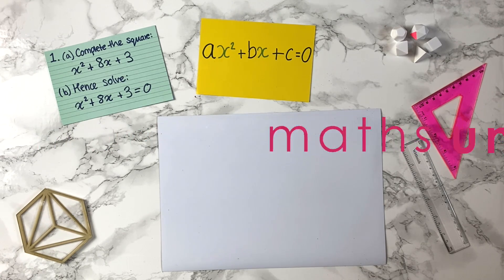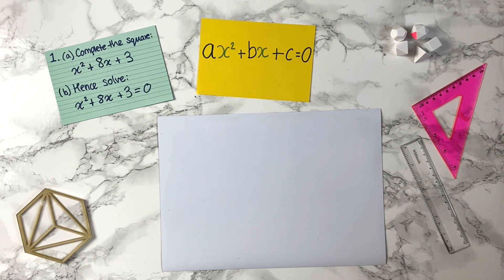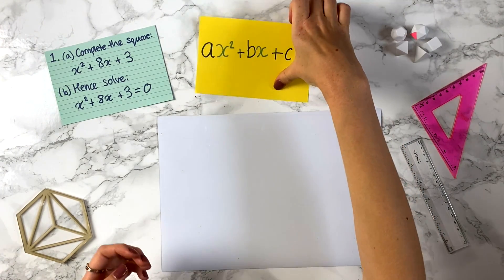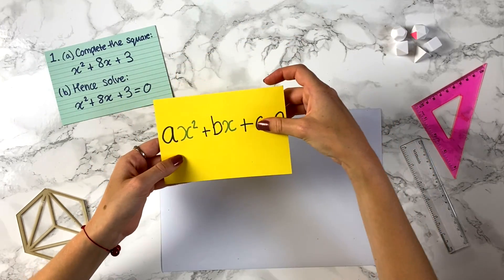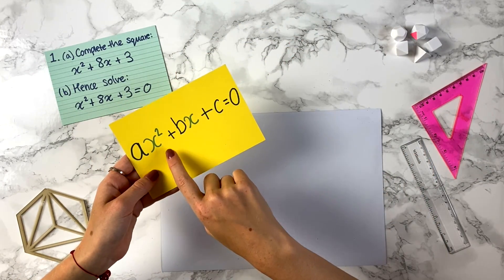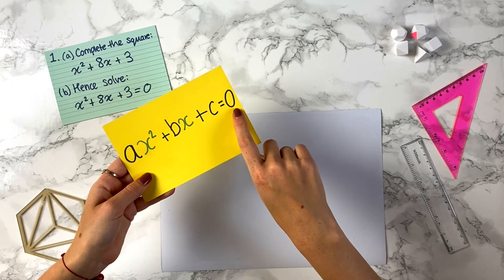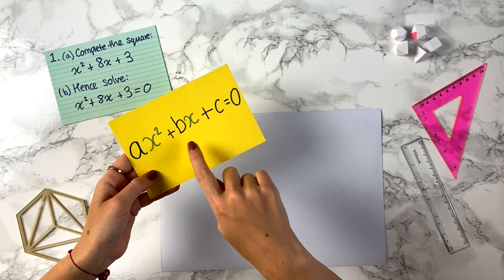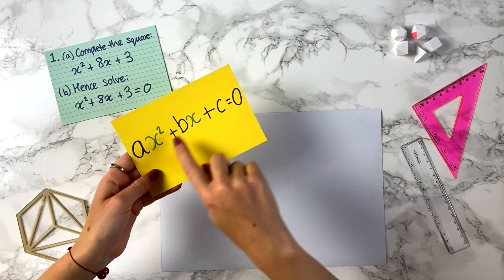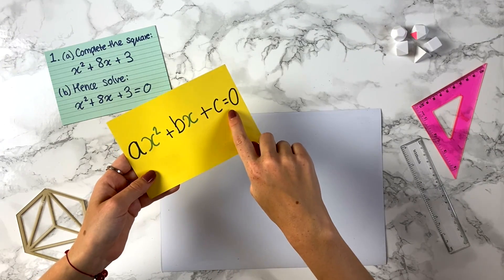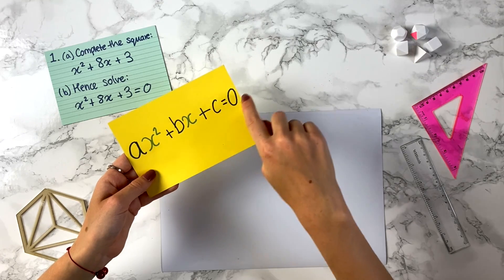Let's have a look at how to solve quadratic equations by completing the square. If you're not sure how to complete the square, watch my videos on completing the square first, as that will make things easier. Remember, a quadratic equation looks like this: ax squared plus bx plus c equals 0, where a, b, and c stand for numbers. This is an equation, not an expression, as we've got the equals 0 part.